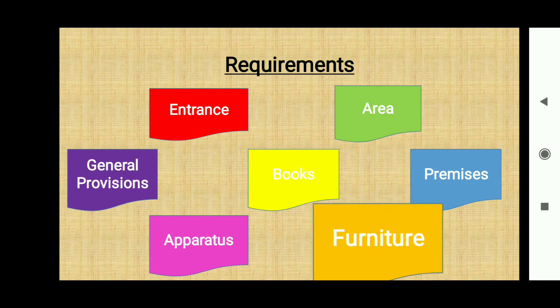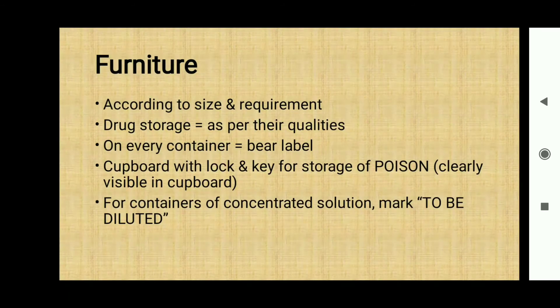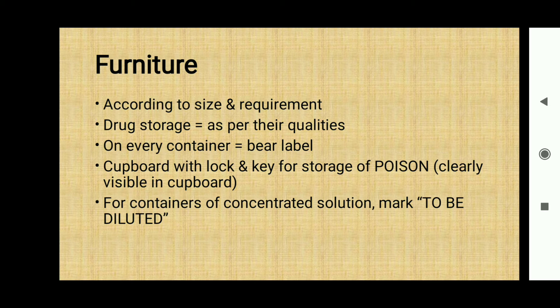The next requirement is furniture. The furniture should be according to its size and requirement. Drug storage should be done as per the drugs' quality and requirement. Each and every container must bear a label of its contents. All poisons should be locked in a cupboard and the word 'Poison' should be clearly visible. For concentrated solutions, a mark or line should be written indicating 'It is to be diluted'.